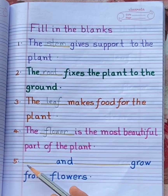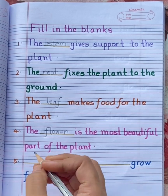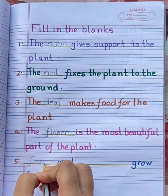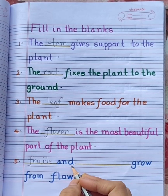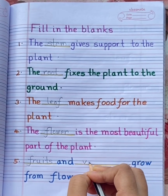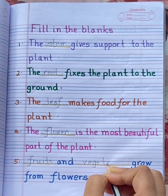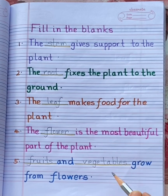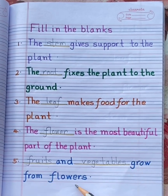Number 5: Dash and dash grow from flowers. Fruits, F-R-U-I-T-S, fruits, and vegetables, V-E-G-E-T-A-B-L-E-S, vegetables. Fruits and vegetables grow from flowers.